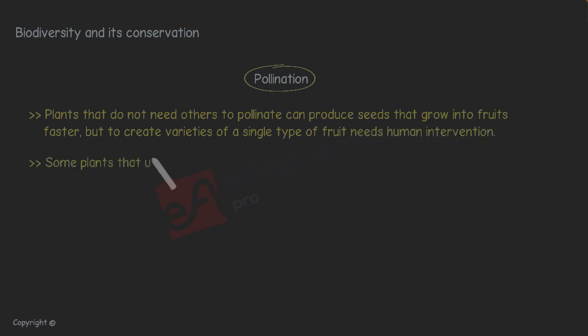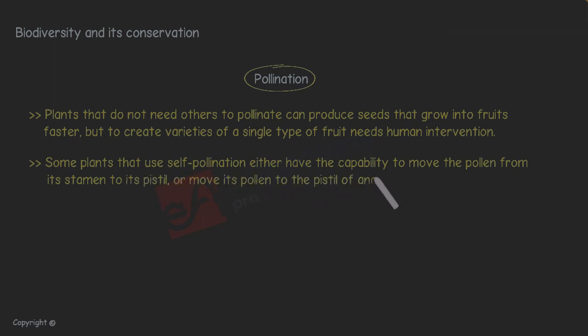Some plants that use self-pollination either have the capability to move the pollen from its stamen to its pistil or move its pollen to the pistil of another plant.